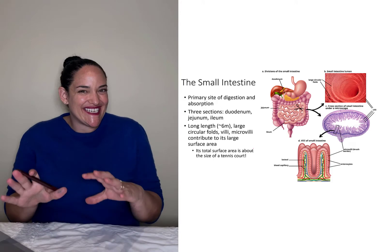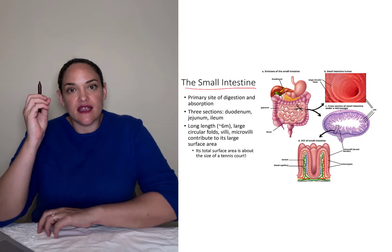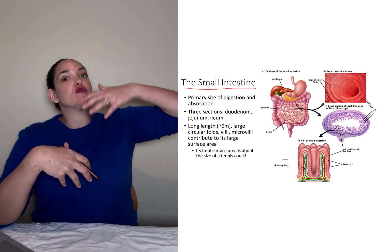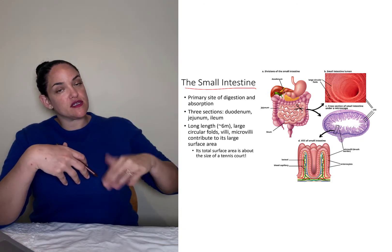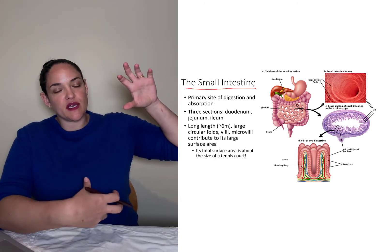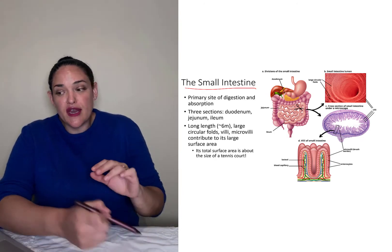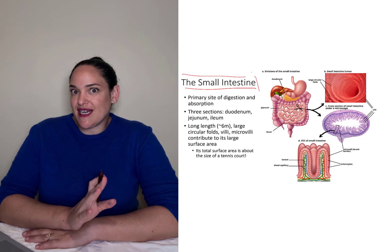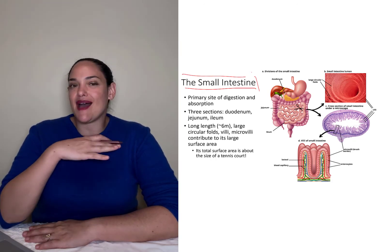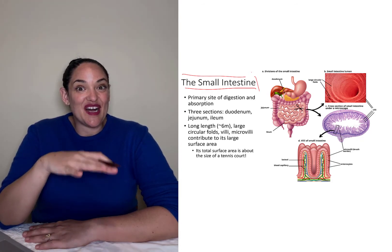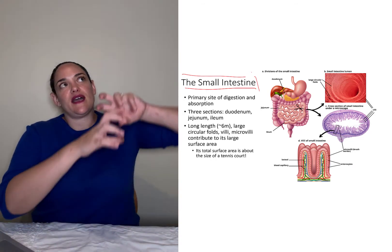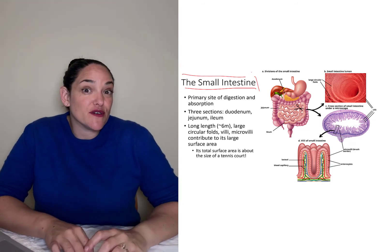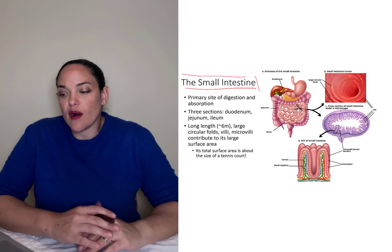Now we arrive at what I call the business end of the digestive tract — the small intestine — where the majority, almost all, of both digestion and absorption occurs. The mouth and stomach were just preparing food so the small intestine could finish the process. The first thing you learn about the small intestine is that it has a massive surface area — about the size of a tennis court — partly because it's very long, about six meters in length.